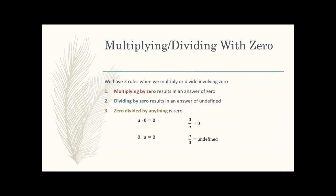Now there are special rules when zero is involved — this is where most people start getting confused. We have three basic things to remember. First, if you are multiplying by zero, you will always get zero. Using the letter A to represent any number: A times 0 equals 0. That means any number times zero gives zero. It doesn't matter the order — as long as zero is somewhere in the multiplication, your answer is zero.